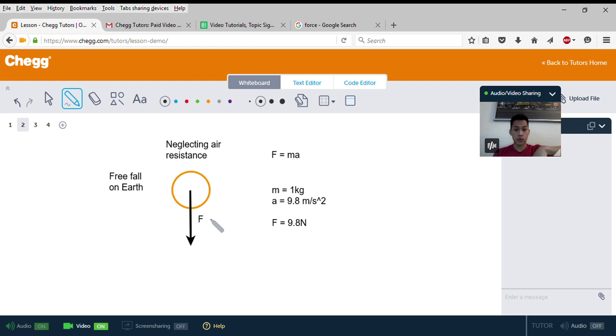Using the second law of motion, we have F = ma. If the ball has a mass of one kilogram and the acceleration due to gravity on earth is 9.8 meters per second squared, we multiply those together and get a force of 9.8 Newtons.